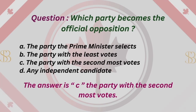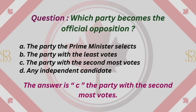Question: Which party becomes the official opposition? A. The party the Prime Minister selects. B. The party with the least votes. C. The party with the second most votes. D. Any independent candidate. The answer is C. The party with the second most votes.